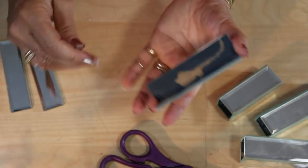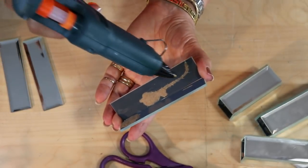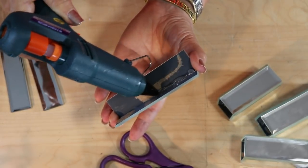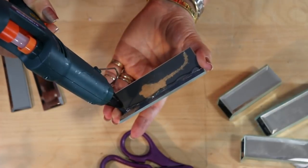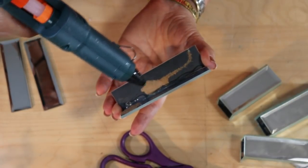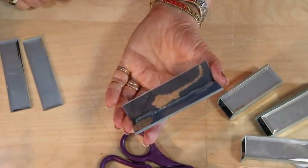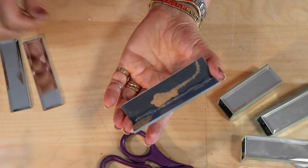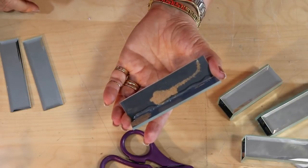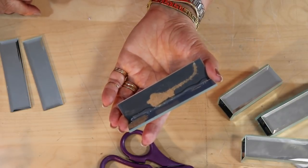You're gonna have these corners meet but not overlap and create your 90 degree angle. Then you're gonna take your glue and run a nice thick line of glue in there and let that hold your pieces together. You're gonna let that cool off.